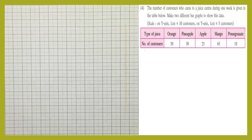Question number four — let's read the question. The number of customers who came to a juice center during one week is given in the table below. Make two different bar graphs to show this data. The types of juice are: orange, pineapple, apple, mango, and pomegranate. The number of customers are: orange 50, pineapple 60, apple 25, mango 65, and pomegranate 10.